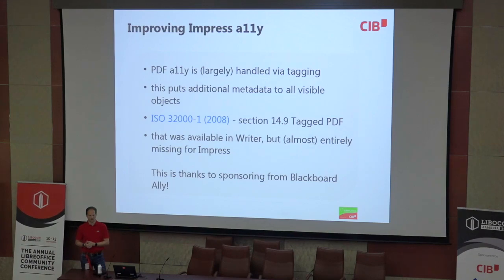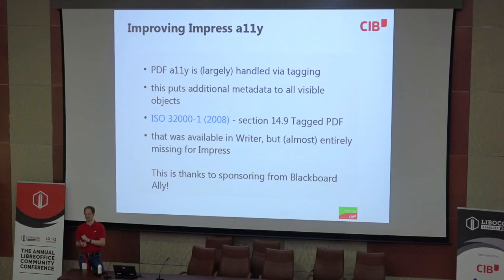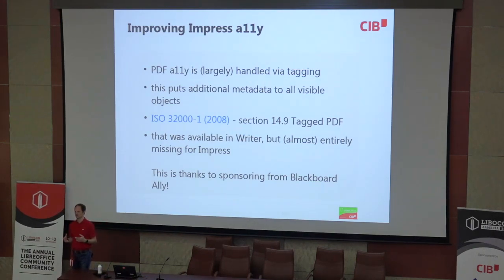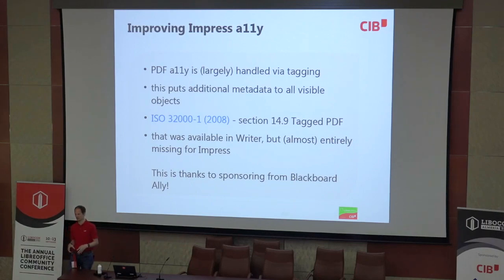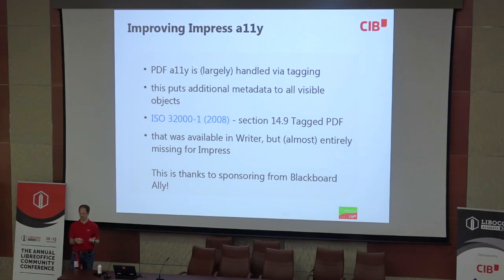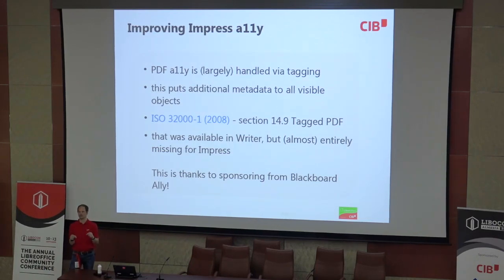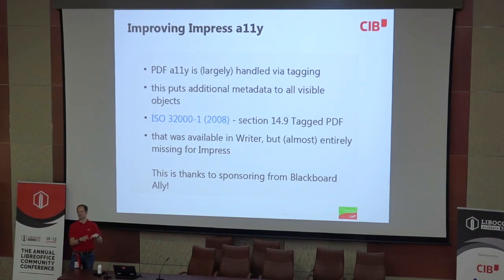There's the original PDF ISO standard, the 2008 version, Section 4.9, that has all the details. As I said, it was available in Writer — the engine and the underlying VCL layer technology to write that out was already there. The information from the application was only implemented for Writer. In Impress, it was just not being passed down — that this paragraph is an enumeration, or that this image is a foreground image and not some master page background.